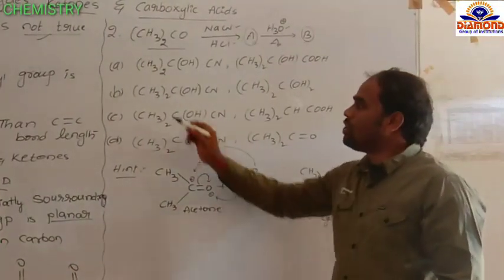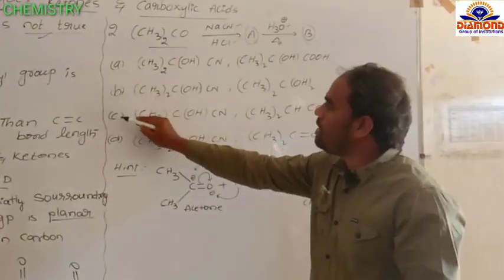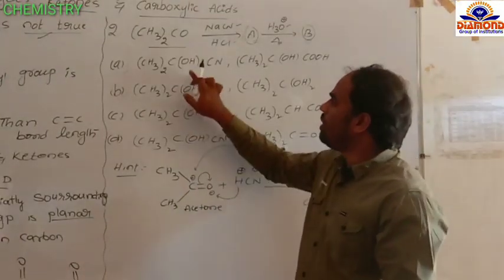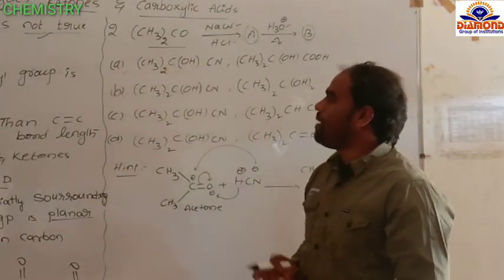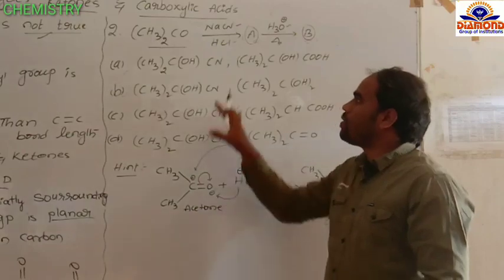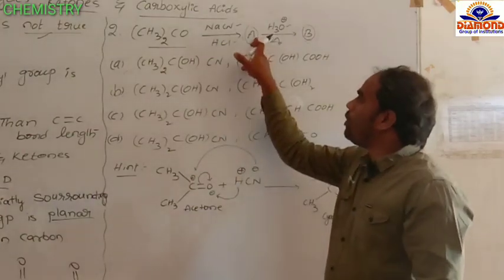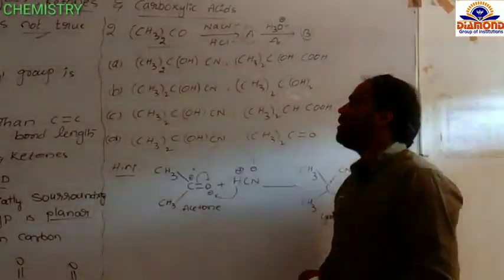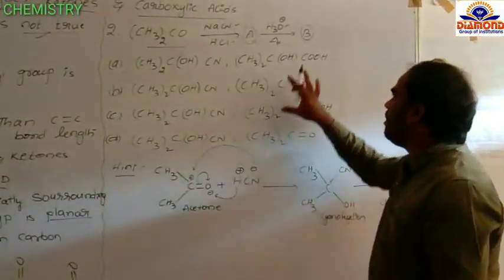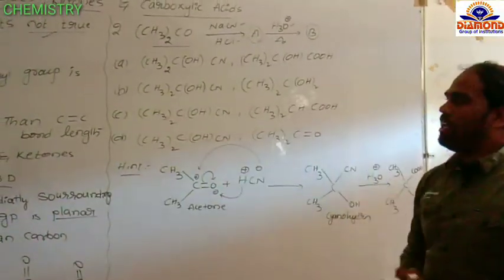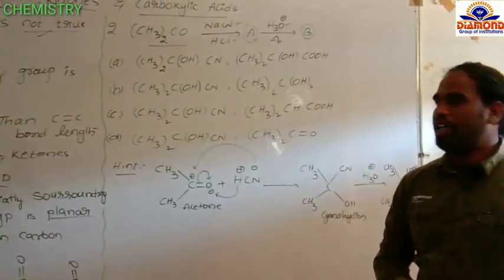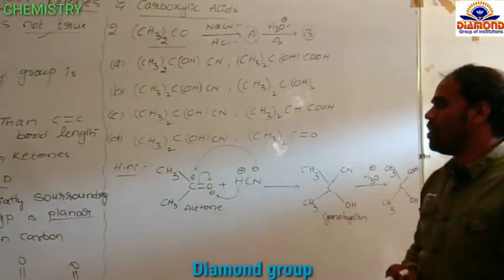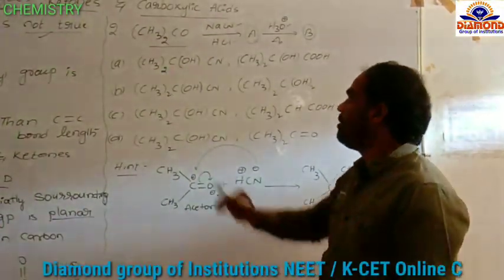Once you observe the four options A, B, C, D — in all these options, compound A is the same: that is cyanohydrin. But the B compounds are different — they are given differently. So let us find out which one is the suitable answer for this question.